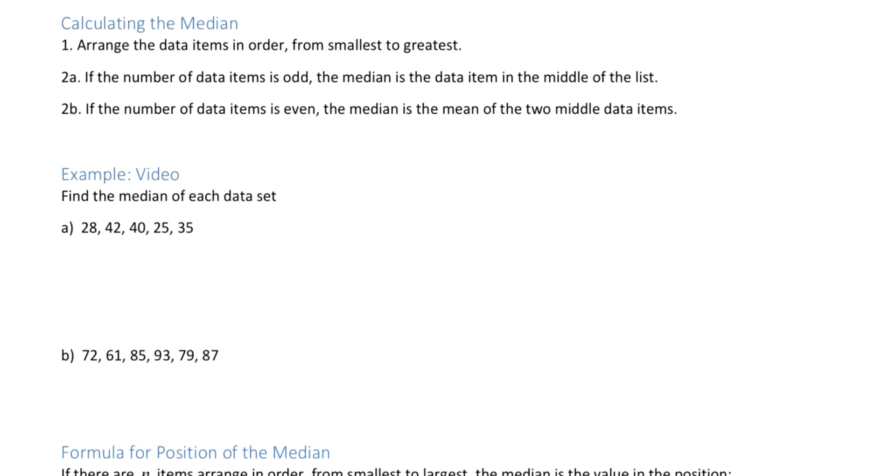In this video, we'll look at how to find the median. Step one: arrange the data items in order from smallest to greatest. Step two: if the number of data items is odd, the median is the data item in the middle of the list. If the number of data items is even, the median is the mean of the two numbers in the middle.